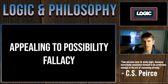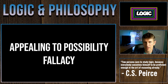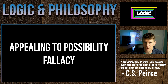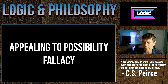This video will focus on the appealing to possibility fallacy. The structure is pretty straightforward: I'll describe what the fallacy is, talk through its form, look through a couple of examples, and then talk about some common everyday uses you might find this fallacy in. In addition, I'll talk about when and why people might actually commit this fallacy, so you'll have a better understanding of when to be on guard. So let's dive right in.